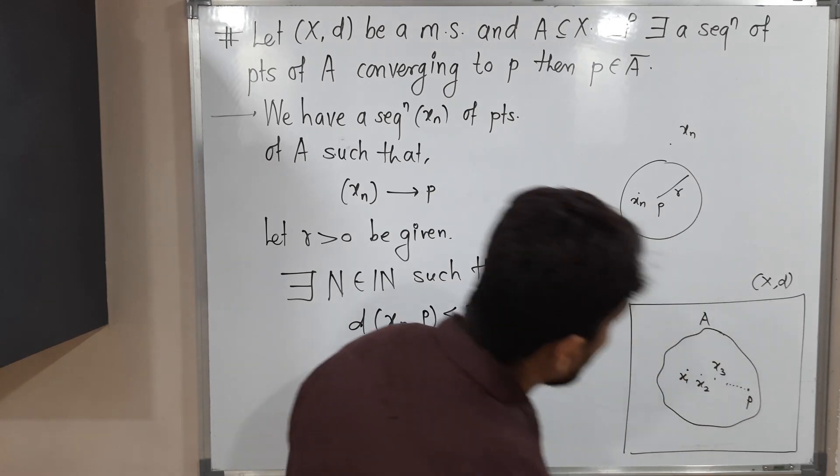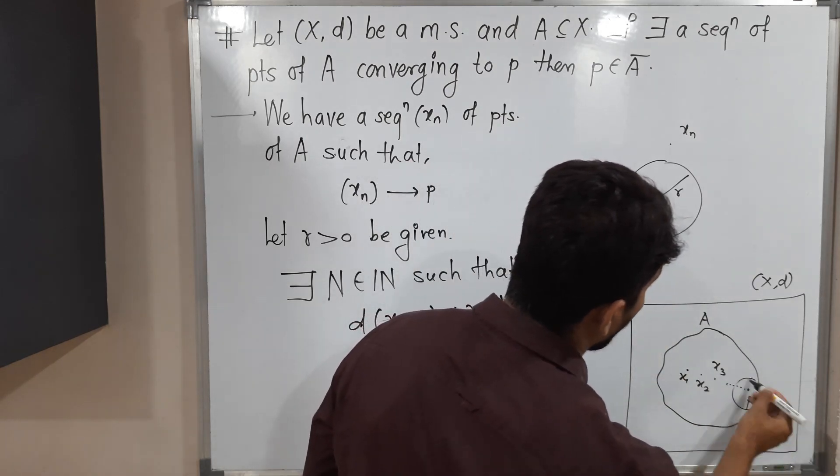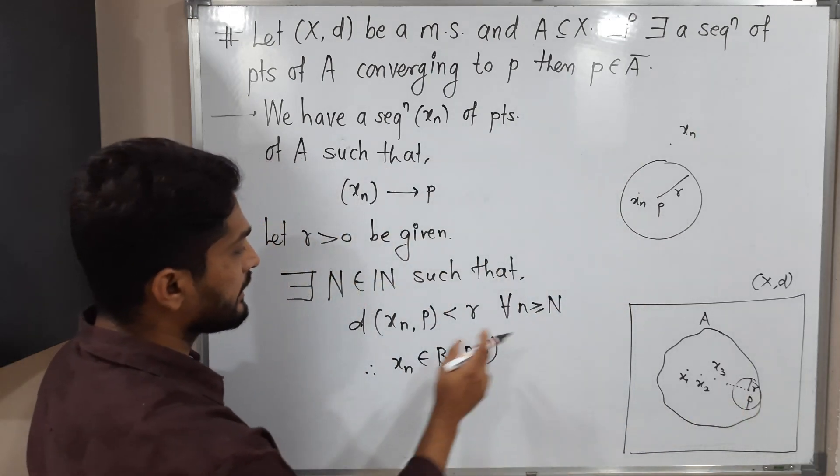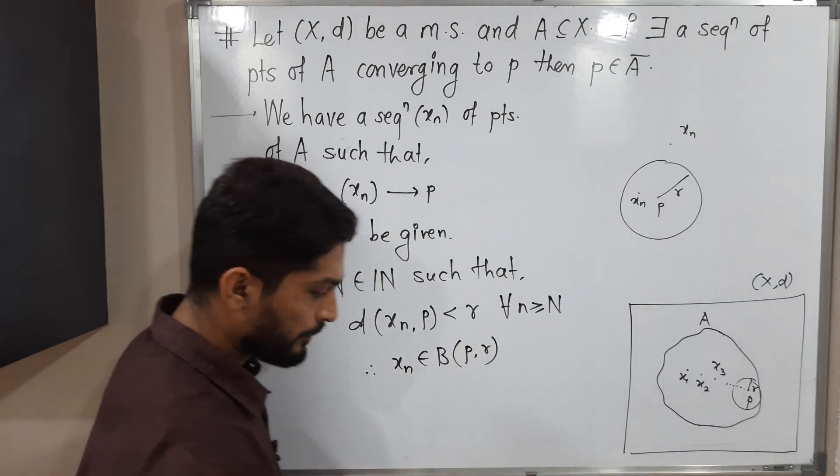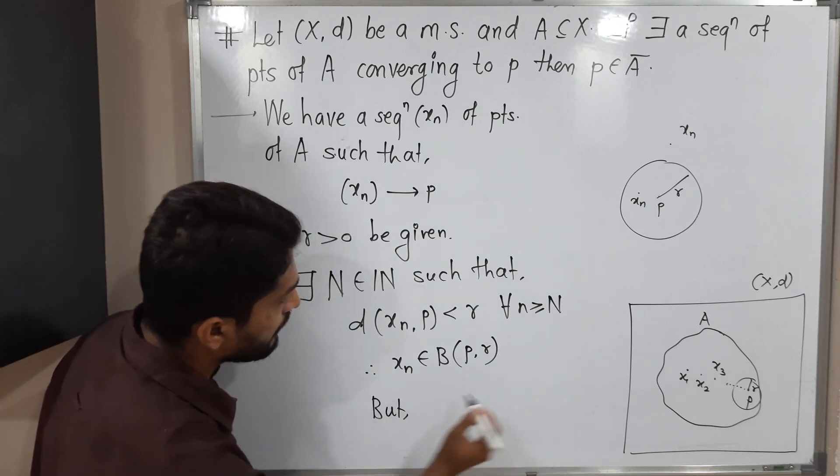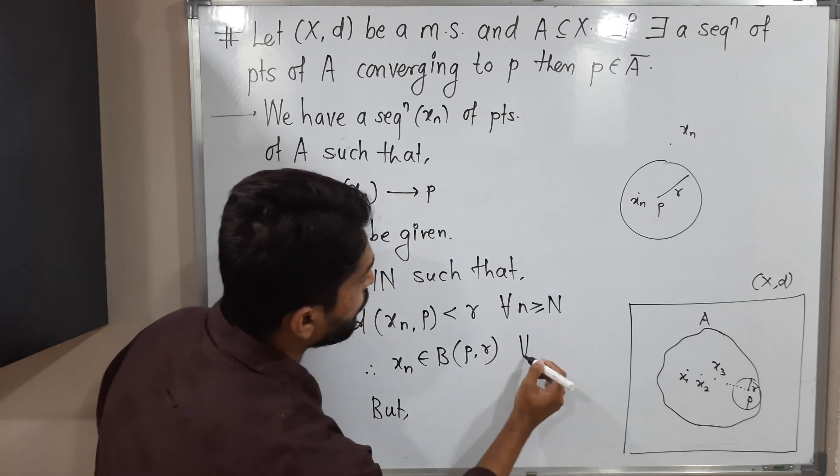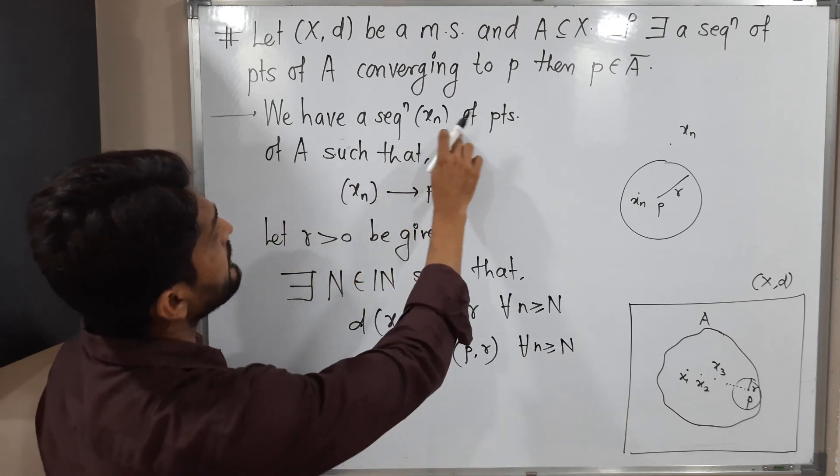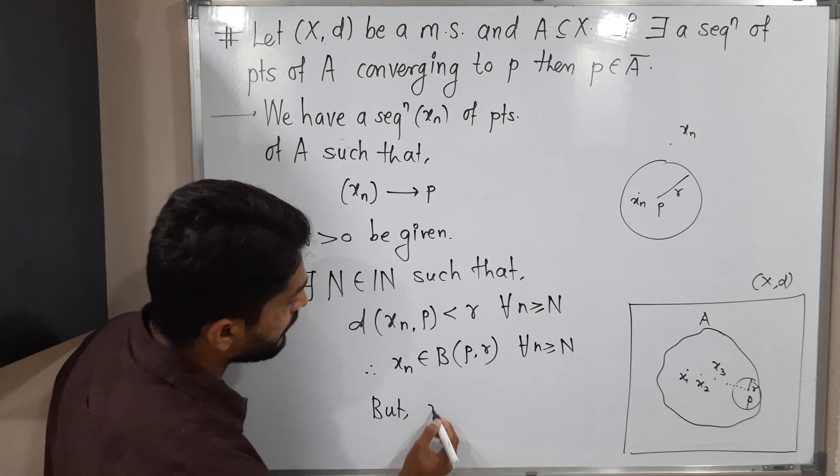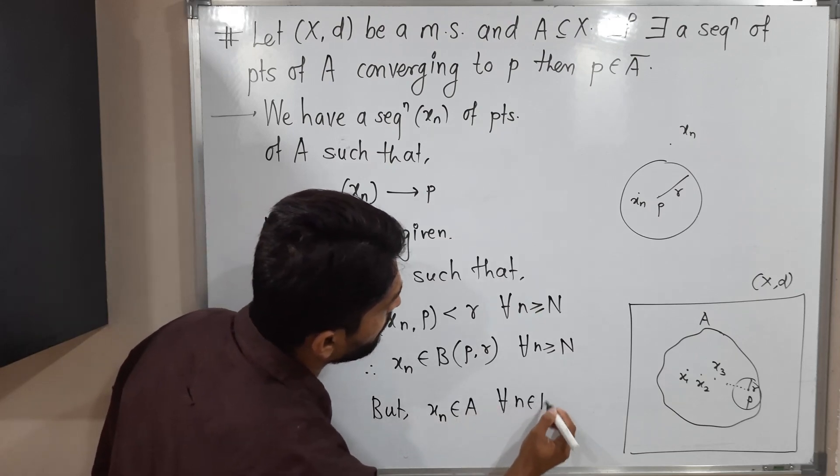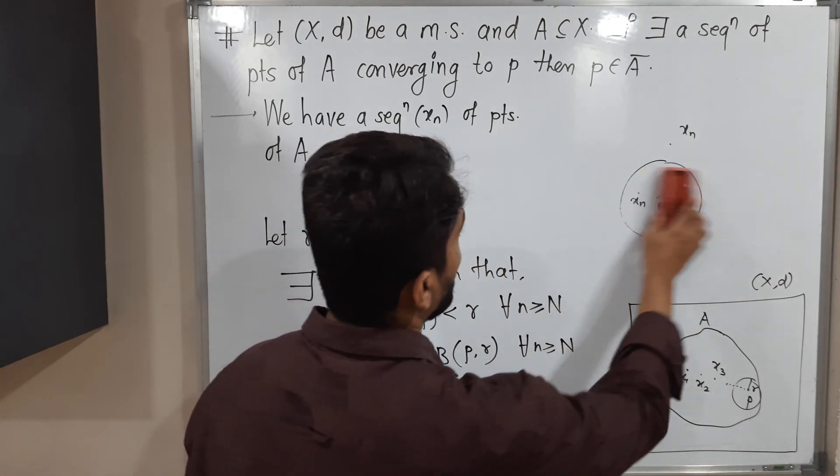Here also you can do the same. If you draw any ball around P with radius R, there is some n such that xn belongs to that ball. See, this is true for all n greater than or equal to capital N. But xn is a sequence of points of A, so xn belongs to A also. This is true for every natural number.